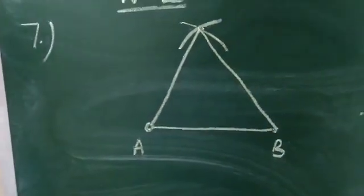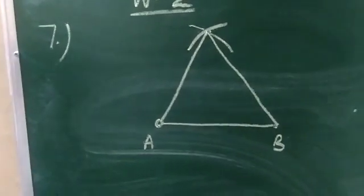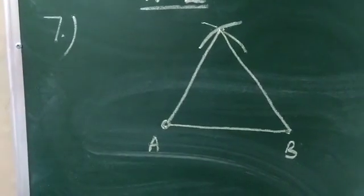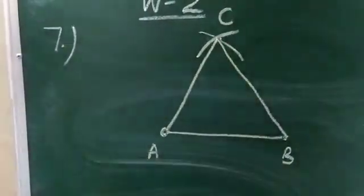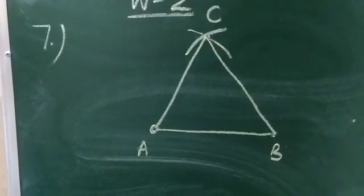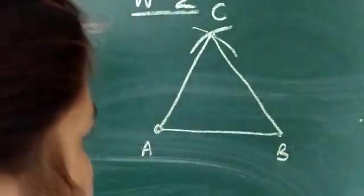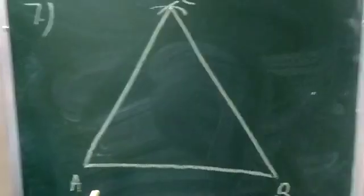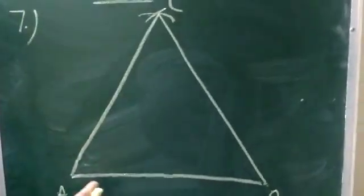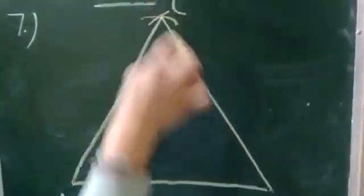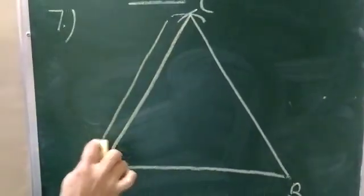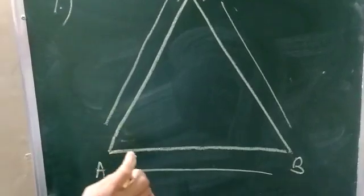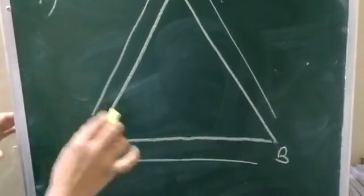We have to draw an equilateral triangle — note, not isosceles — equilateral means all three sides are equal. In this way you can form your equilateral triangle. Label it ABC. You can see this is an equilateral triangle having all three sides equal: AC, BC, and AB.